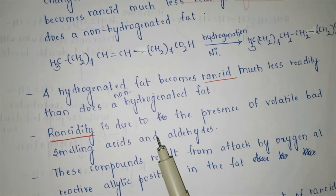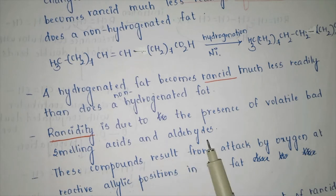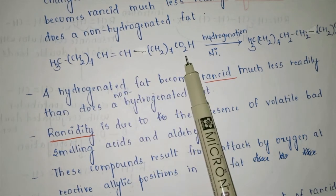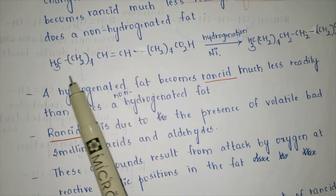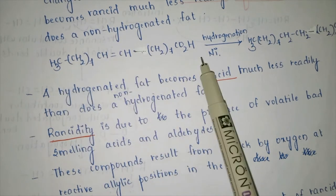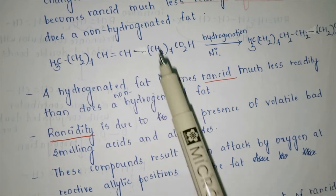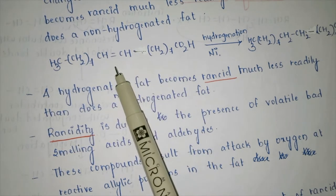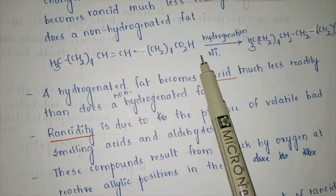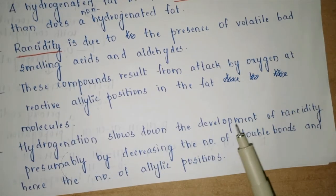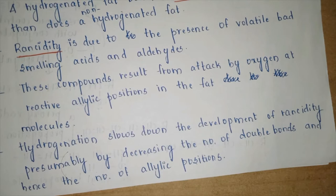Rancidity is due to the presence of volatile, bad-smelling acids and aldehydes. At the double bond positions, oxygen can give either bad-smelling acid systems or aldehyde systems through oxidation, making the fat or oil unfit for consumption. These compounds result from attack by oxygen at a relative allylic position in the fat molecules, producing fatty acids or certain aldehydes.